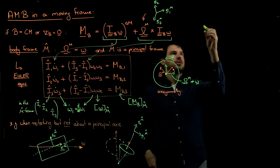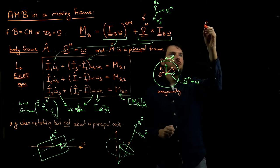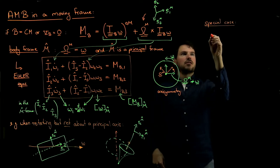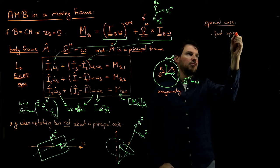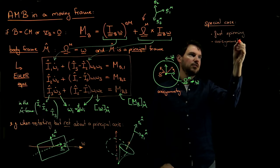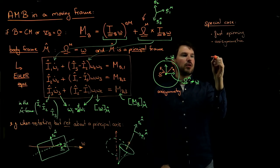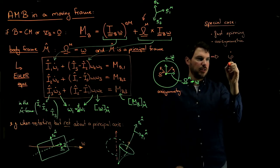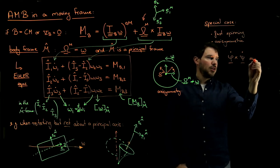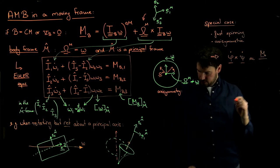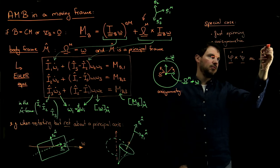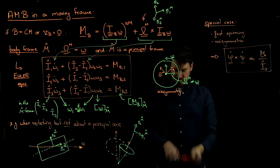One special case: what happens if you have something that spins very fast and is axisymmetric — wheels, spinning tops, and so on? For those, we concluded we can use what we call the TSP rule. This means: precession rate cross spin rate — both being angular velocity vectors — equals approximately the applied torque divided by the moment of inertia I3 about the spin axis. This is the key equation, known as the TSP rule.